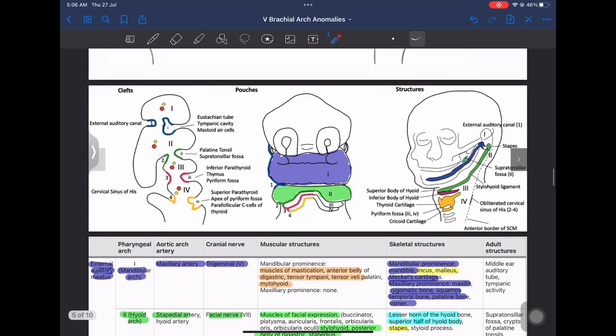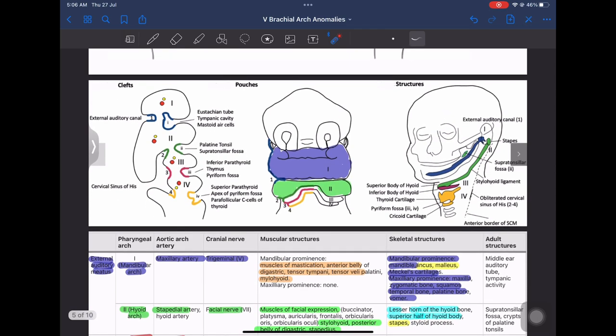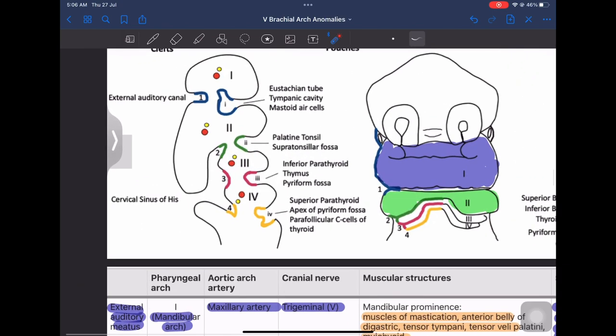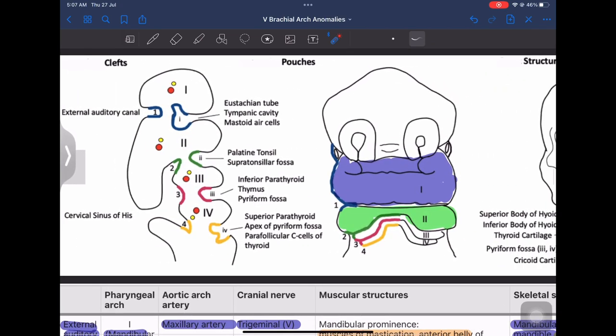Now the green ones I have highlighted here are the pouches and the blue ones are the clefts. Now coming on to the branchial arches and the structures derived from them. Now the first cleft forms the external auditory canal while the first pouch forms the eustachian tube, tympanic cavity and the mastoid air cells.